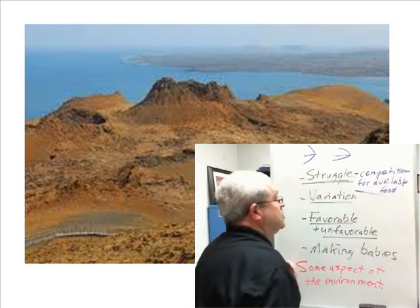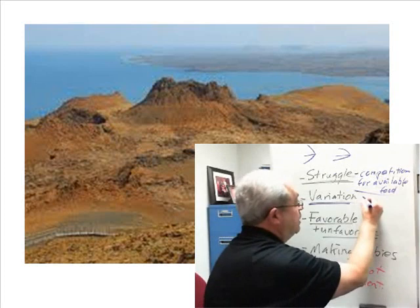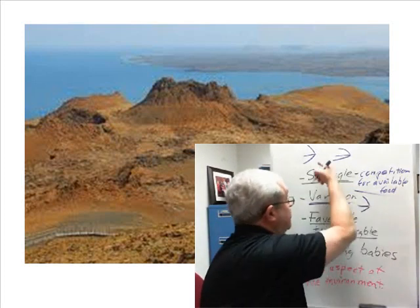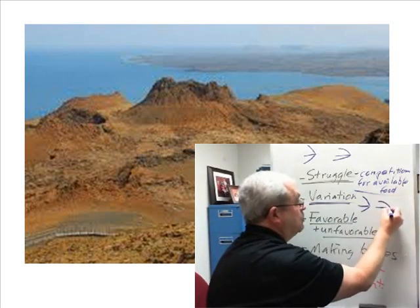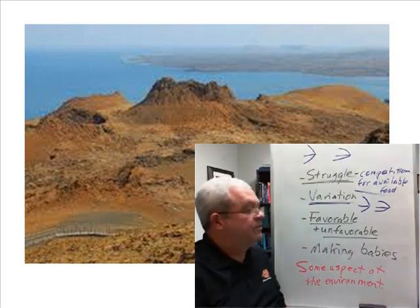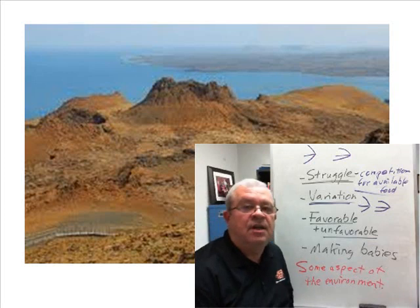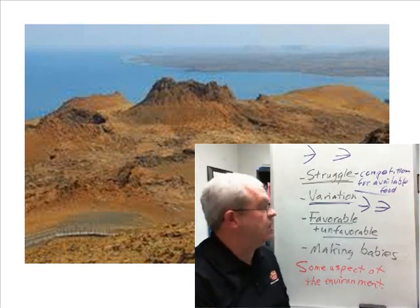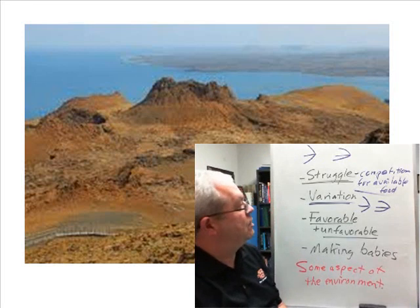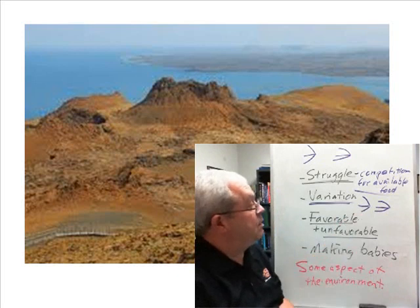We've already talked about the variations. Some baby birds in the nest, to exaggerate quite a bit, had beaks more of this stouter shape, while some had beaks that were a little more long and slender. How could some of those possibly be favorable or unfavorable in the struggle for existence? Well, the islands didn't all have exactly the same thing to eat. Some, for example, majored in tough nuts and seeds to crack open. If you're a finch living on an island where there's mostly tough nuts and seeds, which type of beak would it be better to have?